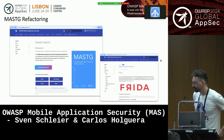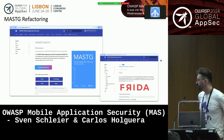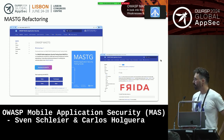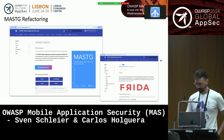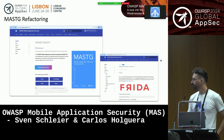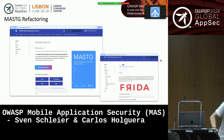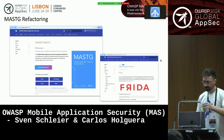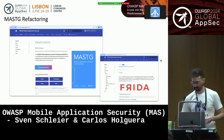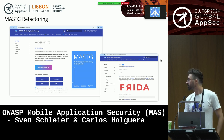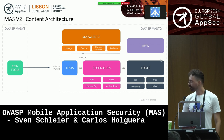As Carlos was saying, we already did the refactoring of the MASVS a while back and have started since last year to refactor the MASTG. As you can see here in the screenshot on the left side, this is from our website mas.owasp.org. You can see there are four different categories — tests, techniques, tools, and apps — and on the right side you can see an example of how one of the tools like Frida might look like.